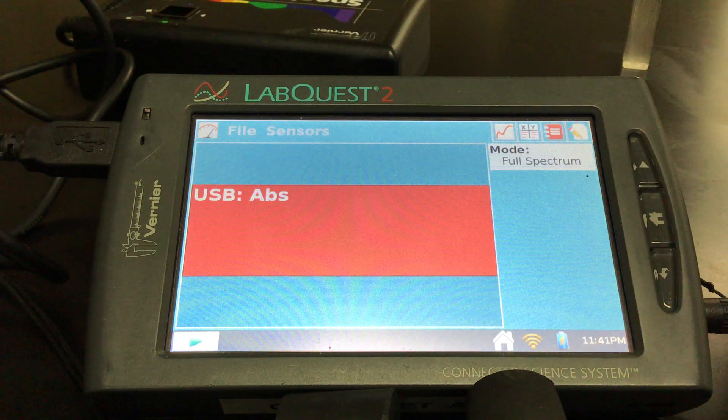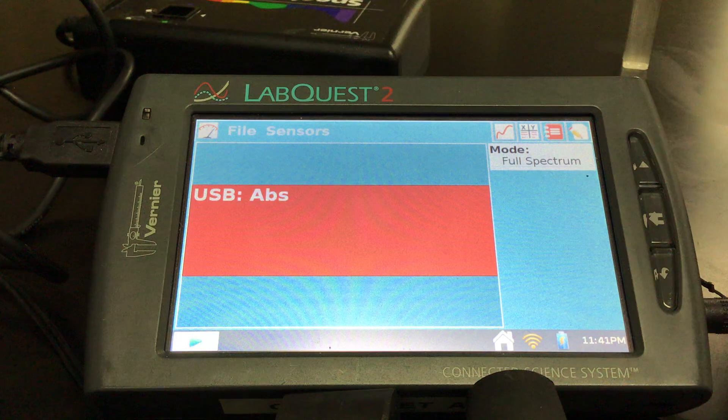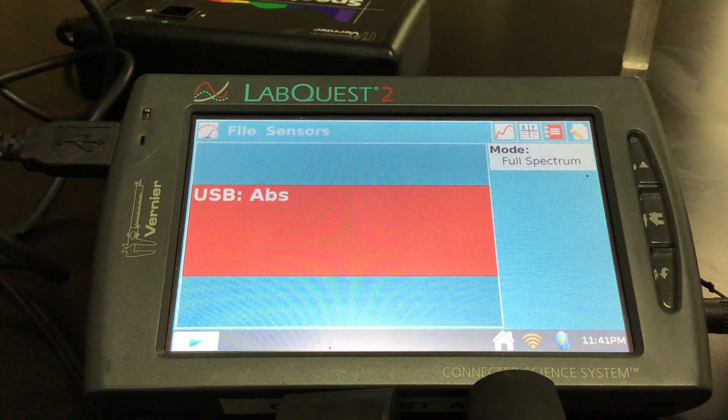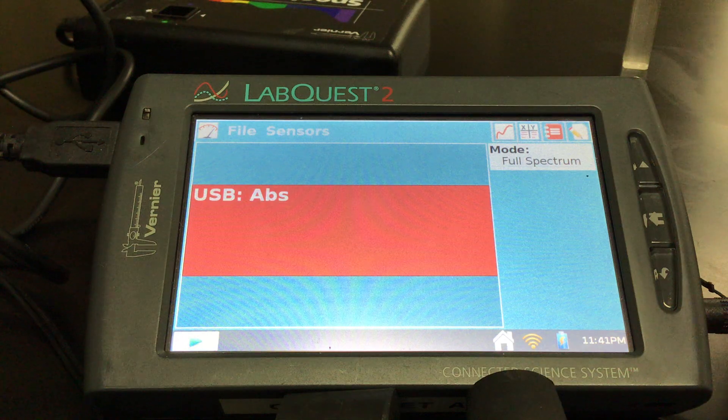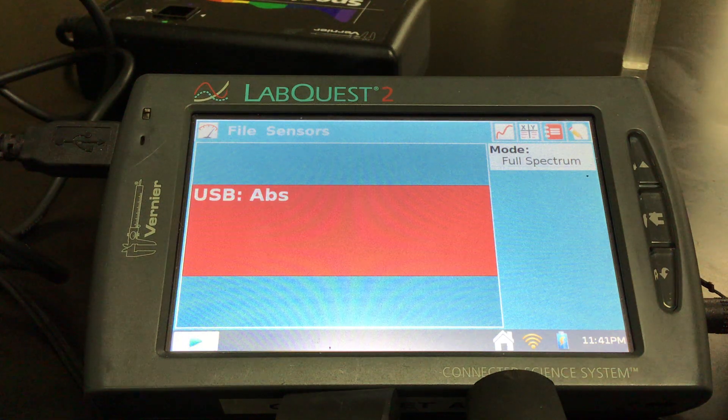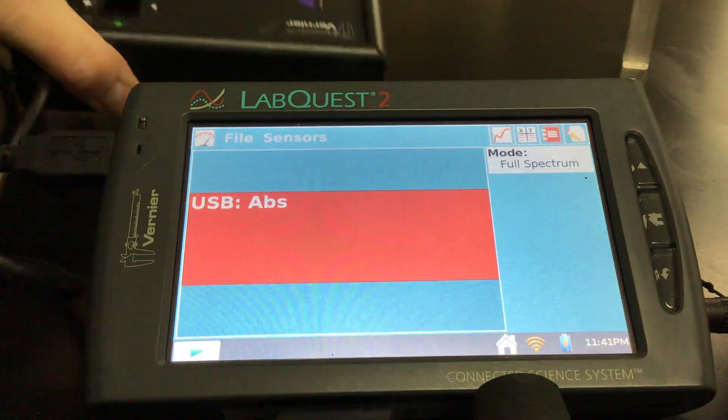Hey everyone, what I'm going to do is go through our crystal violet lab, our kinetics lab using the time-based mode. We're going to figure out the order of the reaction, the rate constant, and some of the analysis. I've put my LabQuest up and I've got my spectro viz which you can kind of barely see in the background.